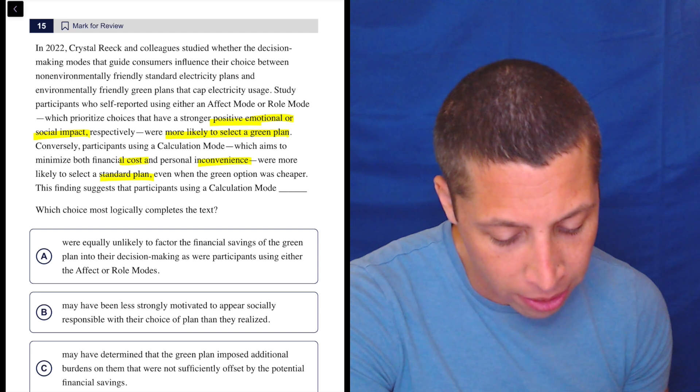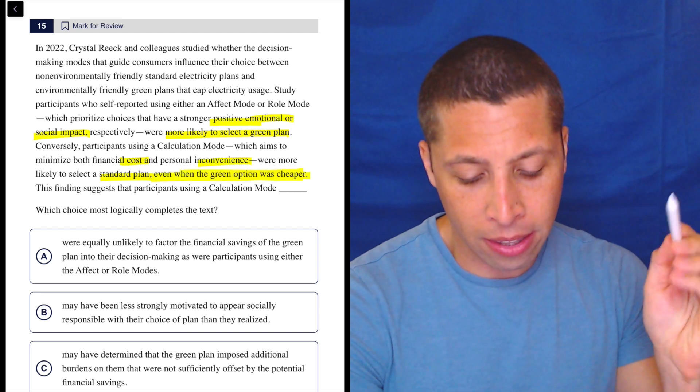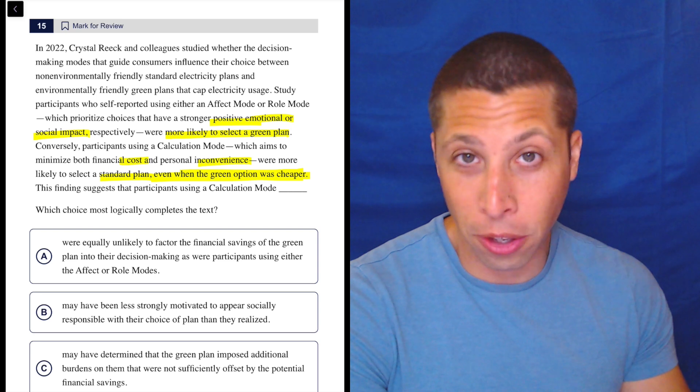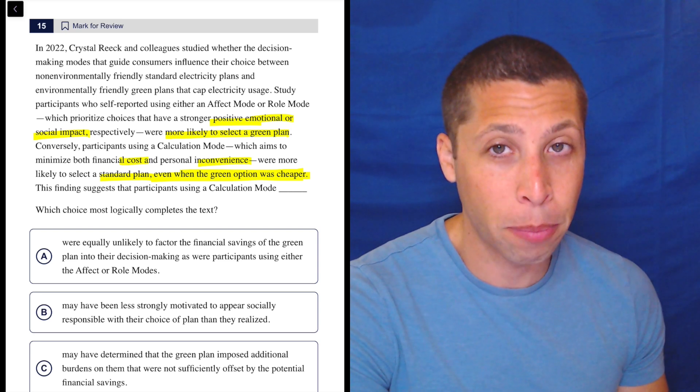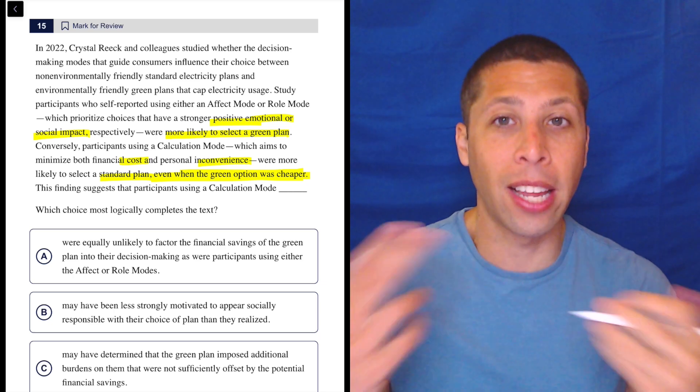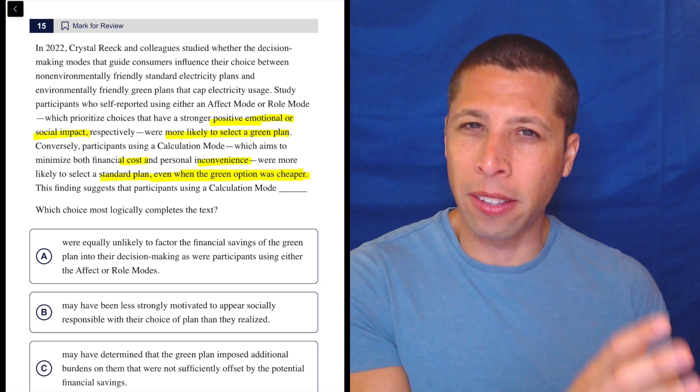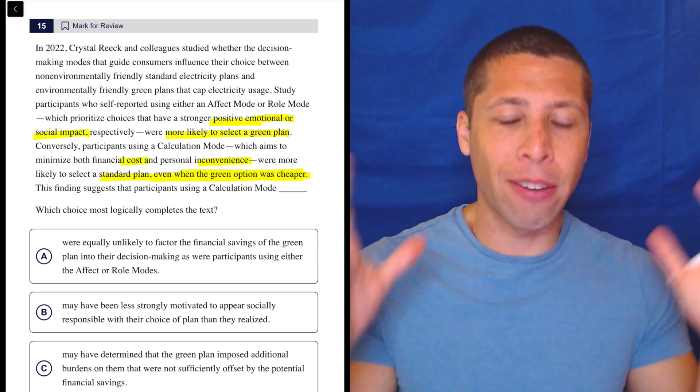Cost and inconvenience meant the standard plan, even when the green option was cheaper. So that's interesting, right? They said the cost thing is what they're thinking of with the calculation mode, but if the green plan is cheaper, they're not doing it. So maybe the cost doesn't matter. You see how very quickly I'm like, oh, they're talking about cost. And now they're saying something weird about the cost. So that resonates with me.